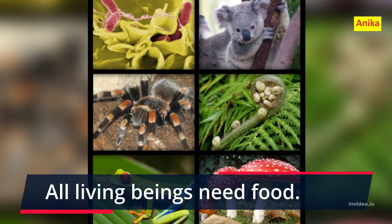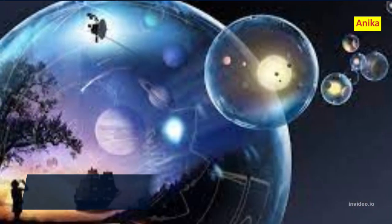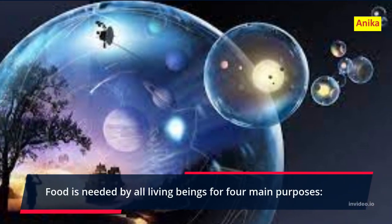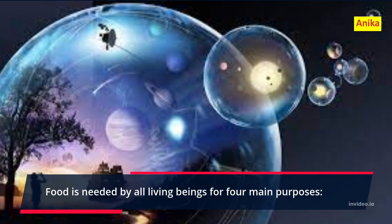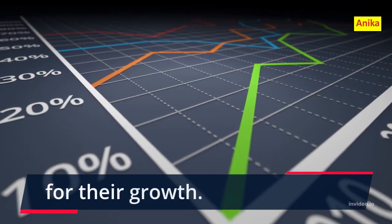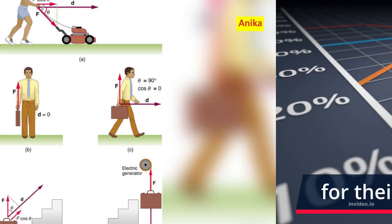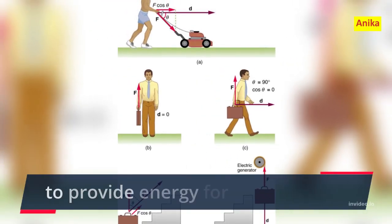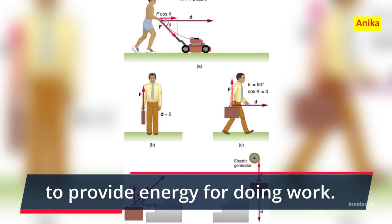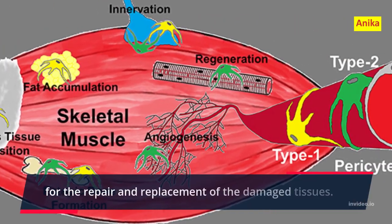Food — where does it come from? Class 6 Science Chapter 1 notes. All living beings need food. Food is needed by all living beings for four main purposes: for their growth, to provide energy for doing work, for the repair and replacement of damaged tissues, and to provide resistance and protection against diseases from infection.